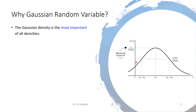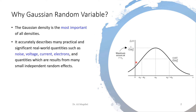The Gaussian density function is the most important of all densities. First, it accurately describes many practical and significant real-world problems. Imagine you want to see how the weight of students in a university is distributed — you'd expect a certain concentration of weights around the mean, with the highest density there, and fewer students as you move away. This is what we call a normal distribution.